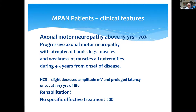Devastating to the motor system was axonal motor neuropathy observed after 15 years of age. We observed progressive axonal motor neuropathy with atrophy of muscles in hands and legs, and weakness of muscle extremities during five to six years from onset of disease. Nerve conduction studies showed slightly decreased amplitude in millivolts and prolonged latency onset at 11–13 years of life, and still progressive.